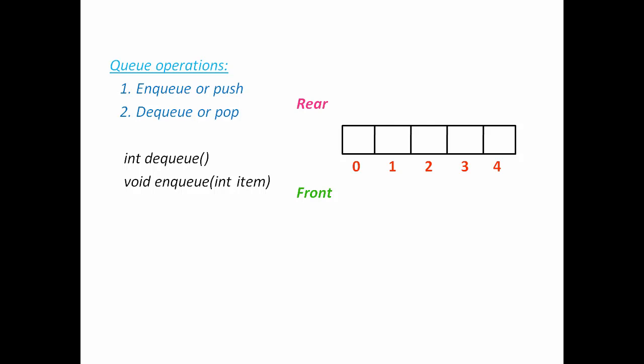When queue is empty, rear and front both are null or minus one. Now we insert an element to the queue. I am going to insert five. When there is no element, meaning queue is empty and we want to insert an element, then first we increment rear and front by one. So now rear and front are at index zero.